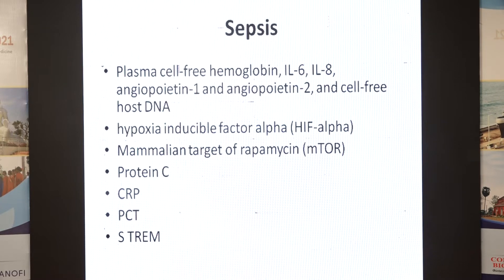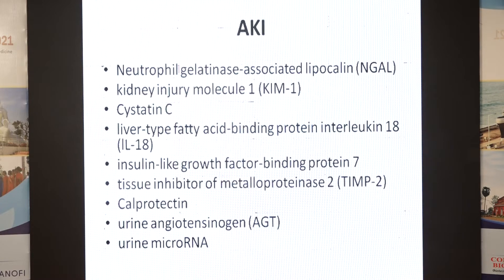For sepsis: protein C, CRP, procalcitonin, and many others claim to identify infection. For acute kidney injury: NGAL, KIM-1, Cystatin, pre-enkephalin, and urine microRNA are all emerging. You would have heard of these through research. A routine CBC gives you leukocytes and lymphocytes too.